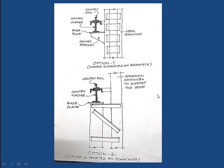The gantry girder can be mounted in two ways. In the first method, it is mounted on a bracket attached to the steel stanchion. You can see a steel stanchion with two channels and steel batten plates welded to it — a built-up section — and on that stanchion a bracket has been welded. This is called the gantry bracket, and on top of the gantry bracket the gantry girder has been placed.